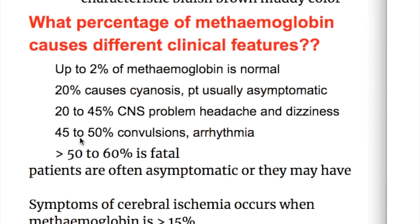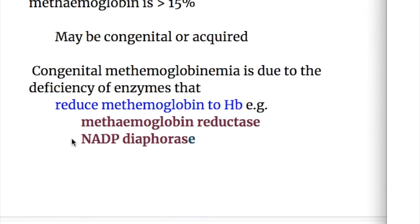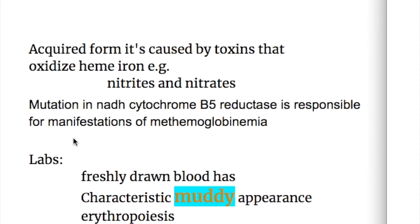Methemoglobinemia patients are often asymptomatic, or they may have symptoms of cerebral ischemia when methemoglobin concentration increases. Methemoglobinemia may be congenital or acquired. Congenital methemoglobinemia is due to deficiency of the enzymes that reduce methemoglobin to hemoglobin — methemoglobin reductase and NADH diaphorase. The acquired form is caused by precipitating factors such as toxins that oxidize heme iron, for example nitrates and nitrites. G6PD deficiency also causes methemoglobinemia.